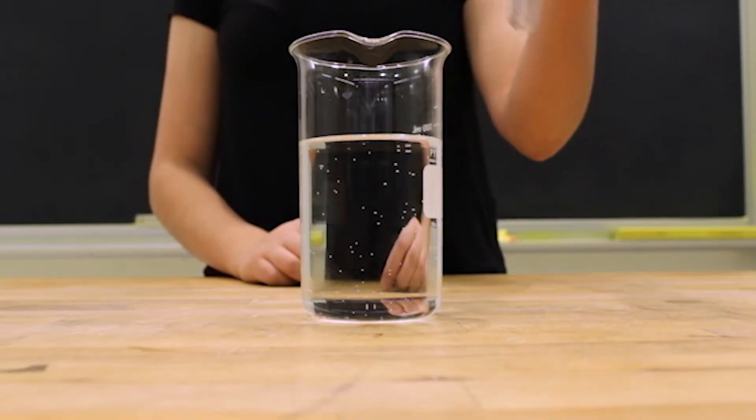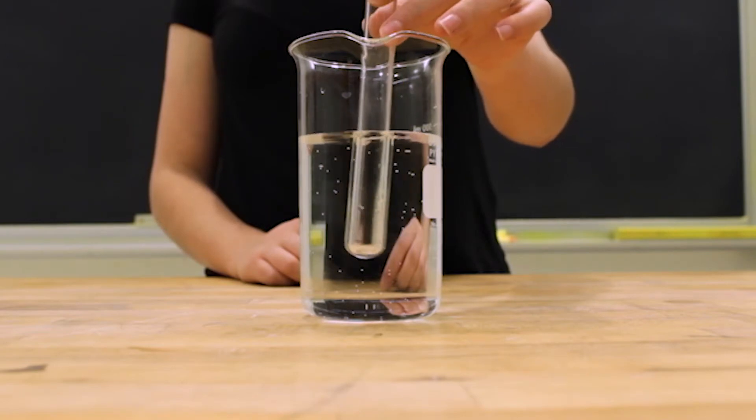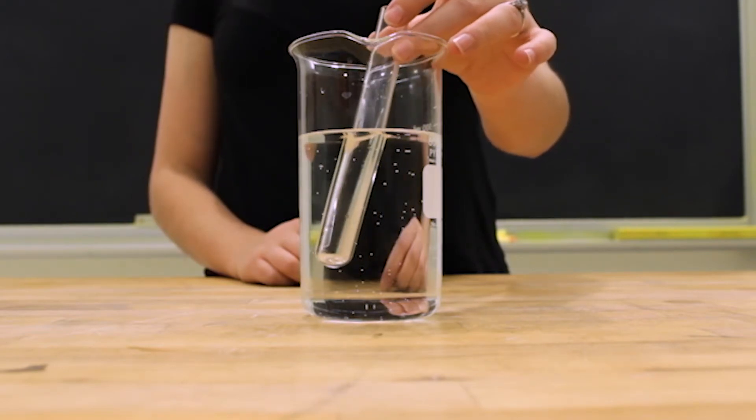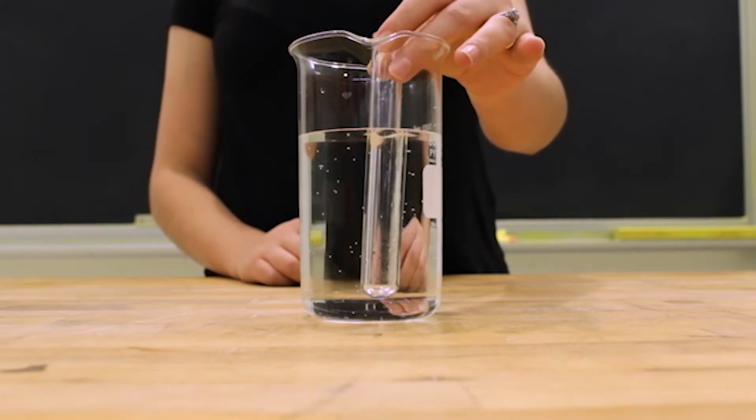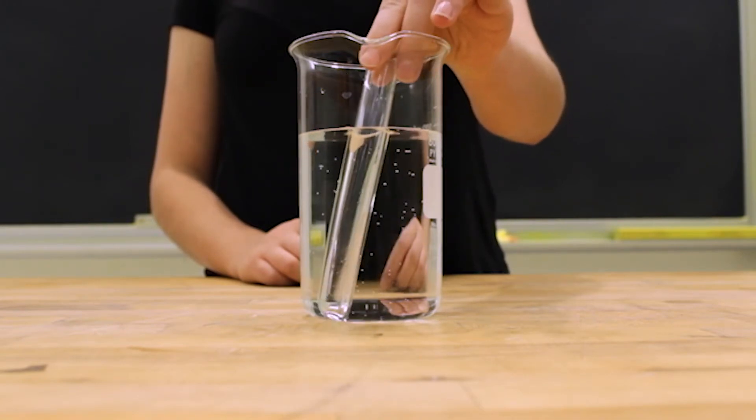Here I have placed a Pyrex test tube in a beaker of water. Note that the test tube is apparent due to the difference in the indices of refraction. N of air is approximately 1.0, water 1.33, and Pyrex glass 1.47.